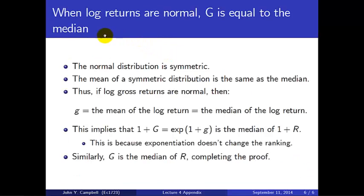Now a final property that I want to discuss and give you a sketch proof is that when log returns are normal, G is equal to the median return.